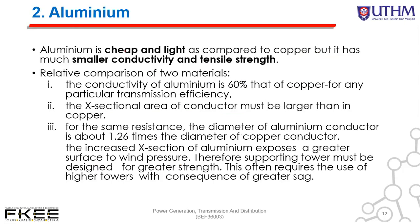Second is aluminium. Aluminium is cheaper and lighter compared to copper, but it has smaller conductivity and smaller tensile strength. The conductivity of aluminium is 60% that of copper. The cross-sectional area of aluminium conductor must be larger than copper for the same resistance. The diameter of an aluminium conductor is about 1.26 times the diameter of a copper conductor. The increased cross-sectional area of aluminium exposes a greater surface to wind pressure, therefore supporting towers must be designed for greater strength.